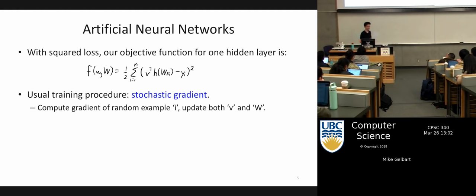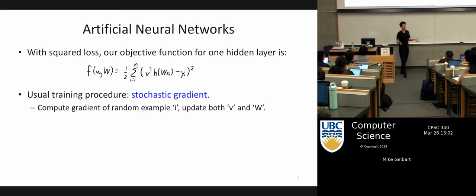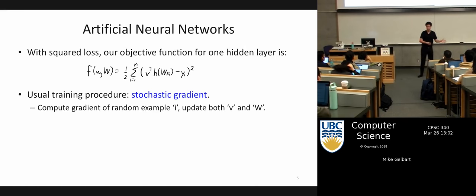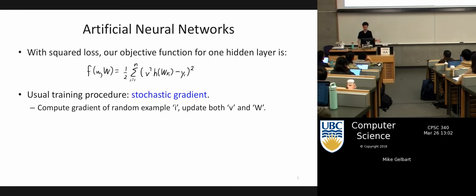Last time we talked about what neural networks are but didn't say anything about loss functions. Today we need to talk about training. At least when you're doing regression, pretty much all the stuff about loss functions is in play. You can use squared error or other losses. Squared error is the standard choice. So W multiplies by x, then we do this non-linearity h that gives us our new features, and from there it just looks like linear regression — some vector times the features.